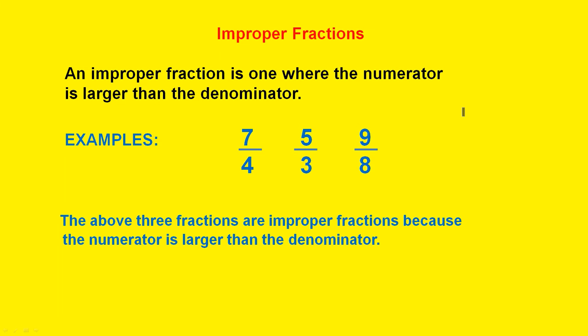Improper fractions. An improper fraction is one where the numerator is larger than the denominator. So if you look here, the numerator is seven, the denominator is four, and it's the same for these two fractions here. So the above three fractions are improper fractions because the numerator is larger than the denominator.